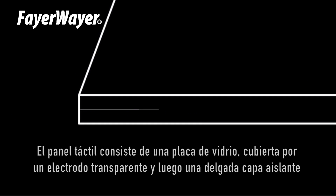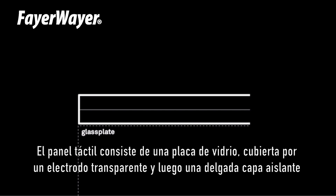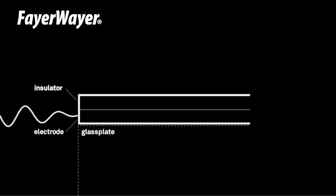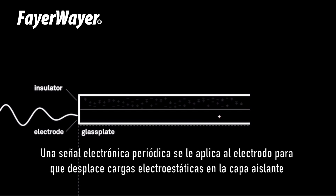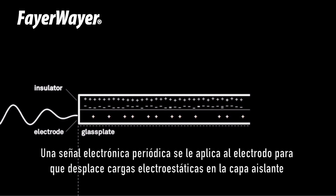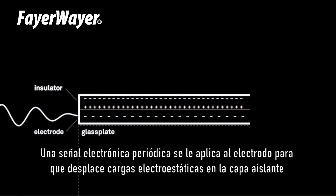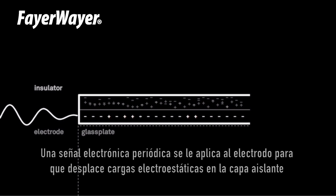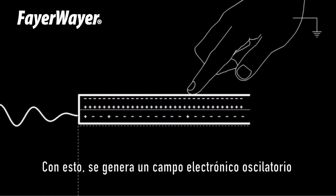The tactile panel consists of a glass plate covered by a transparent electrode and a thin insulation layer. A periodic electrical signal applied to the transparent electrode displaces charges within the insulation layer, creating an oscillating electric field.